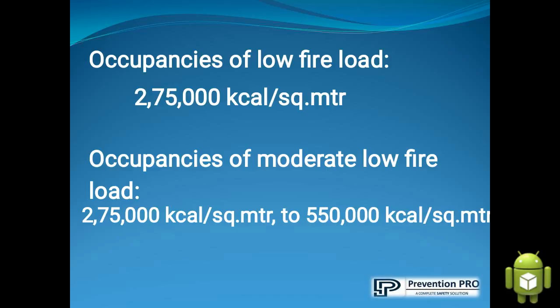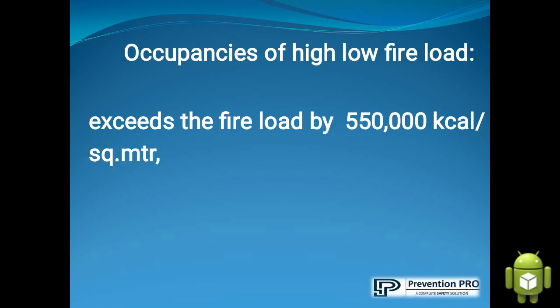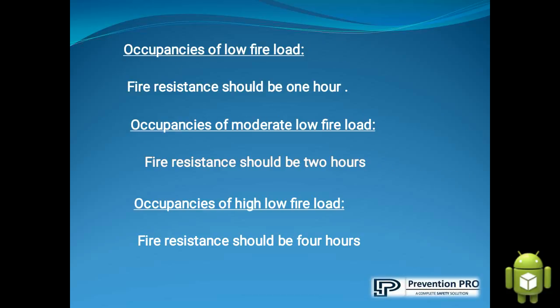Occupancies of low fire load is up to 2.75 kilocalories per square meter. Occupancies of moderate fire load is from 2.75 kilocalories per square meter to 5,50,000 kilocalories per square meter. Occupancies of high fire load exceeds 5,50,000 kilocalories per square meter. Low fire load: fire resistance should be one hour. Moderate fire load: fire resistance should be two hours. High fire load: fire resistance should be four hours.